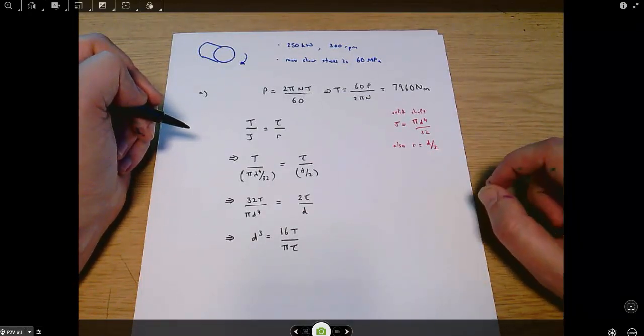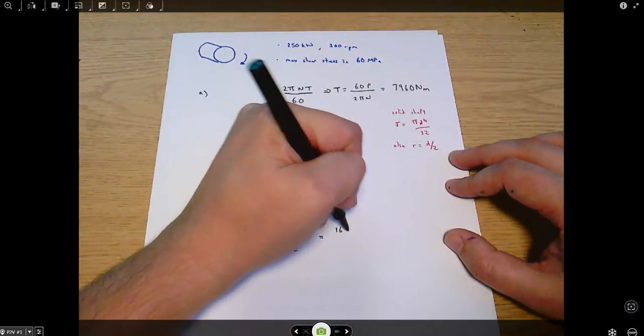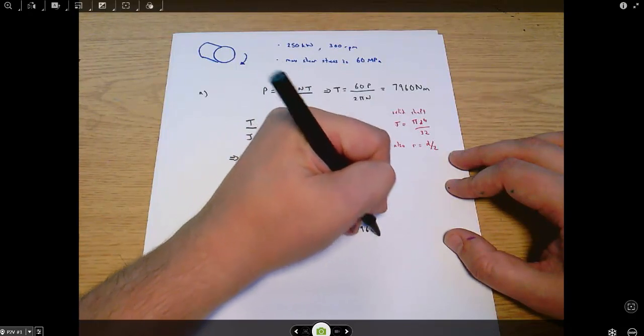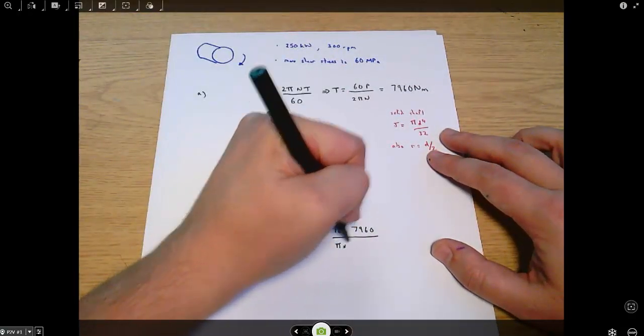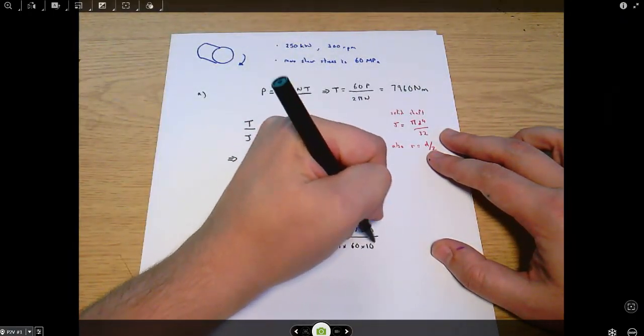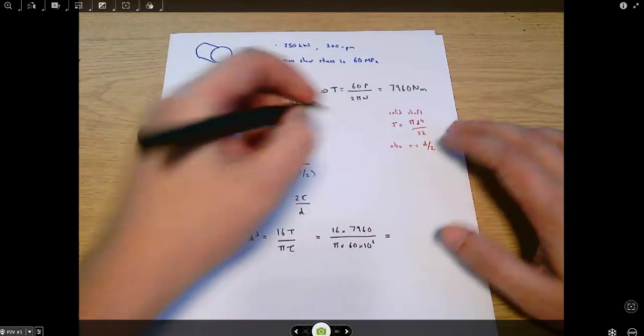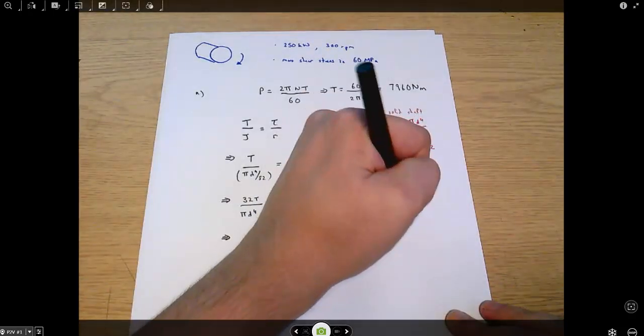From there I can put in some numbers. That's 16 times 7960, the number I calculated up here, divided by pi times the maximum shear stress which is 60 times 10 to the 6.